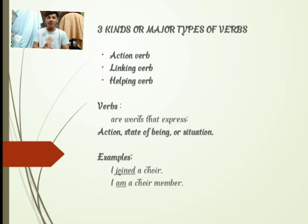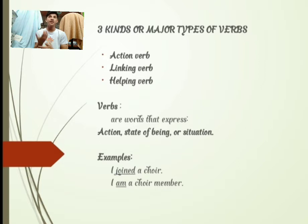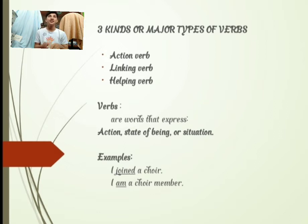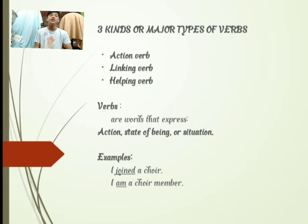Let's take a look at these examples. The first example is: 'I joined a choir.' The action verb there is 'joined' because it shows the action of joining a choir. The second example is: 'I am a choir member.' That sentence does not show action or movement. The word 'am' is a linking verb, not an action verb. We can identify the difference between action verbs and linking verbs.